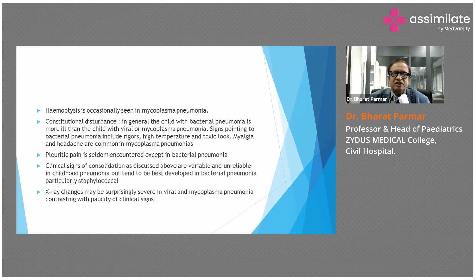In bacterial pneumonia, there is a lobar opacity on X-ray. In staphylococcal pneumonia, there is development of pneumatoceles, which may rupture, leading to empyema and pneumothorax. X-ray changes may be surprisingly severe in viral pneumonia and mycoplasma pneumonia, in contrast with the paucity of clinical signs. So in viral pneumonia, there is no clear clinical or radiological correlation.